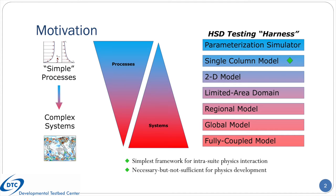The motivation for creating this model is twofold. First, given the incredibly complex nature of NWP models, there is a need to test its various components using a spectrum of simpler models. The concept of a hierarchical testing harness for a NWP system might look something like the collection of boxes on the right. Simpler models excel at investigating issues on the physical process level, whereas more complex models are required for testing on the systems level. A single column model is one necessary but not sufficient tool within the hierarchical testing framework, and is the simplest way to test a group of physics schemes together as a suite.